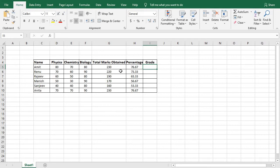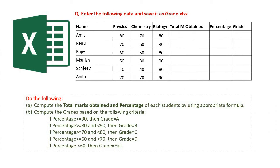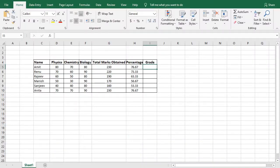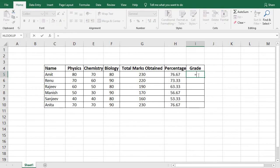Now we are going to find the grades — grading of students based on their total marks. As per the question, grades are based on the percentage obtained by students. The criteria: if percentage is greater than or equal to 90, grade A; greater than or equal to 80, grade B; greater than or equal to 70, grade C; greater than or equal to 60, grade D; otherwise, Fail.